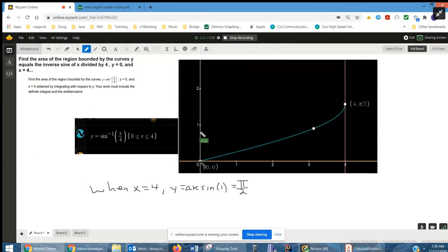To the right we have the graph, this blue curve, which represents y equals the inverse sine of x over 4. I've only shown it for values of x between 0 and 4 inclusive.